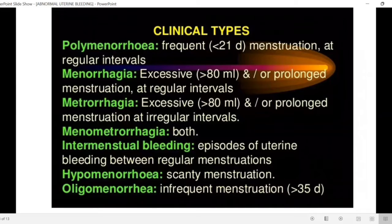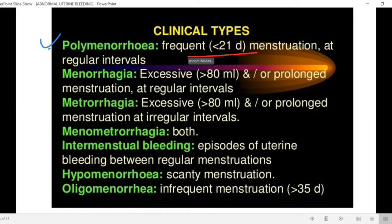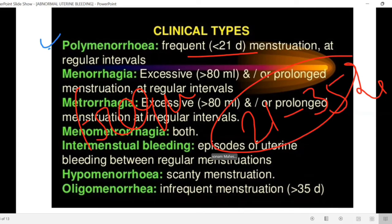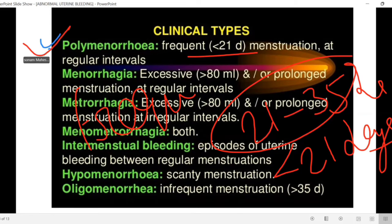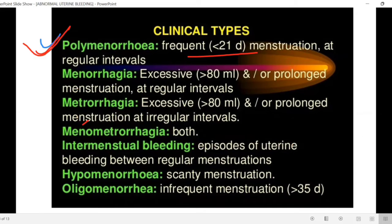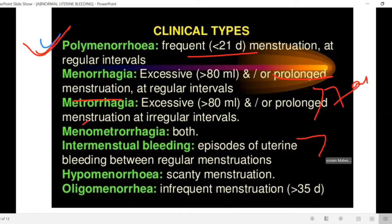Now let's talk about some clinical types. The first one is polymenorrhea. Poly means frequent. If someone has a menstrual cycle of less than 21 days, then it is classified as polymenorrhea. Menorrhagia involves an excessive amount of blood loss — prolonged menstruation meaning more than 7 days or more than 80 ml blood loss.